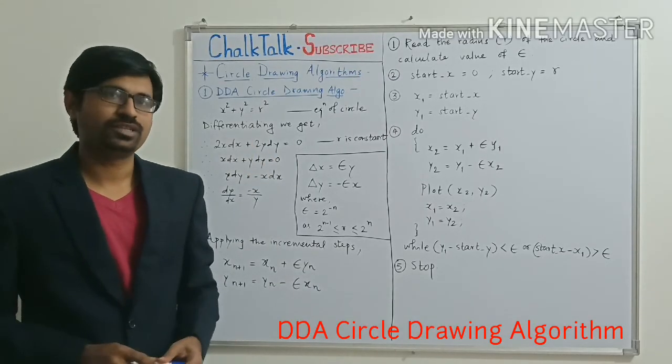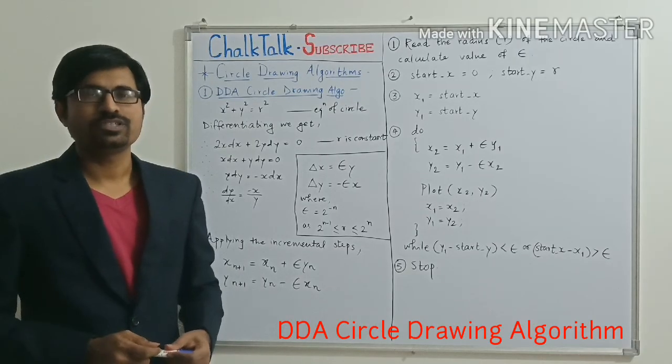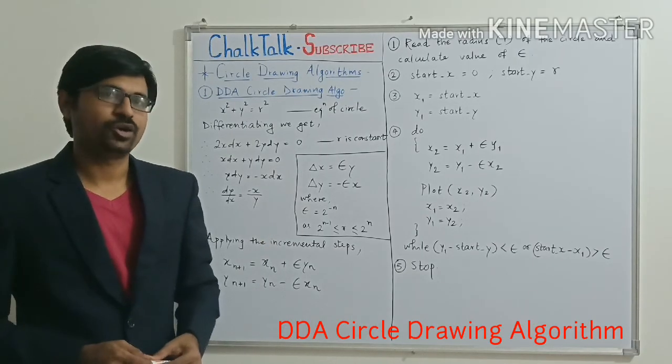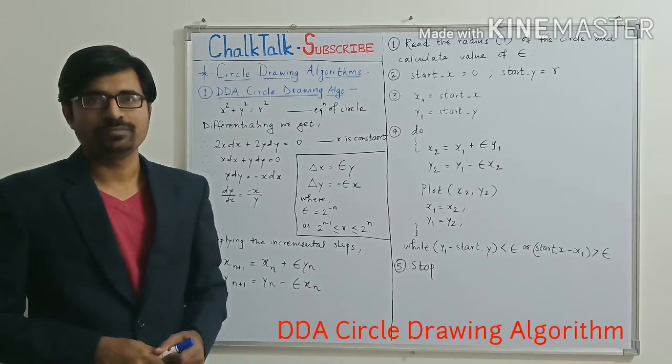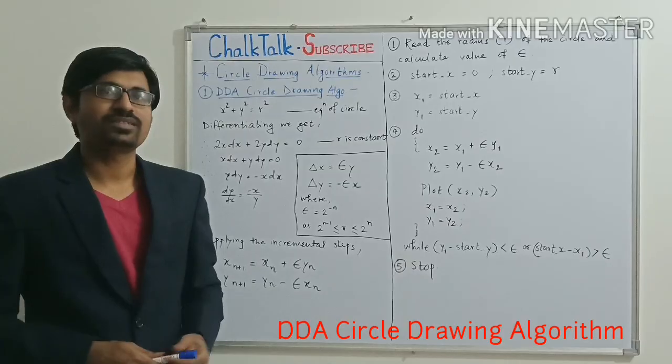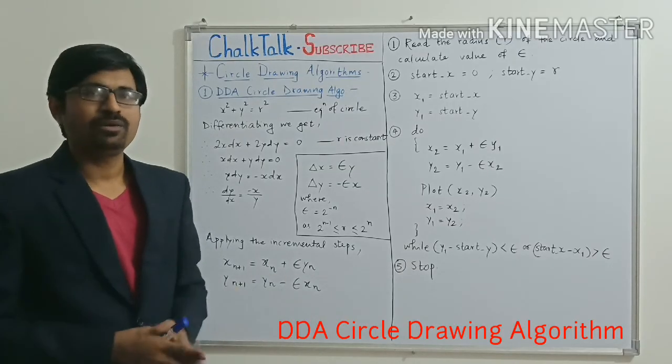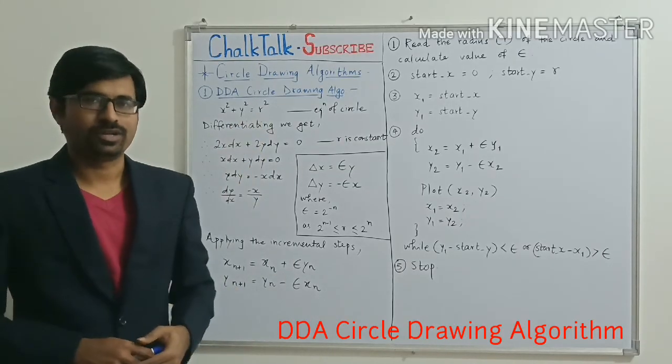Our today's topic of discussion is circle drawing algorithms. Specifically there are three algorithms for circle drawing. First one is DDA circle drawing algorithm which is also called vector generation. Second one is Bresenham circle drawing algorithm and third approach is midpoint circle drawing algorithm. In this particular tutorial we will be talking about DDA circle drawing algorithm.